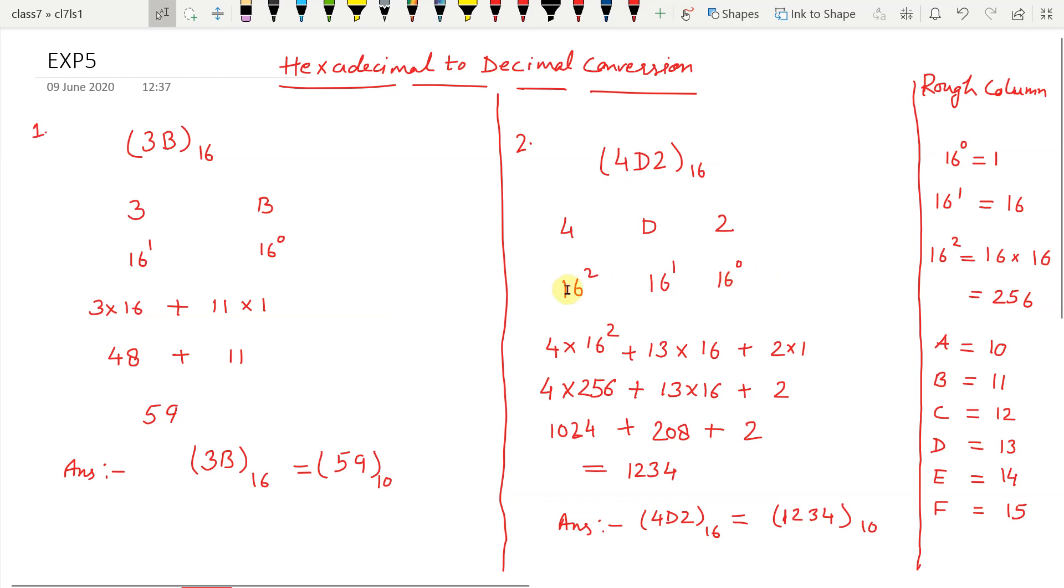Write their positional value: 16 to the power of 0, 16 to the power of 1, 16 to the power of 2.